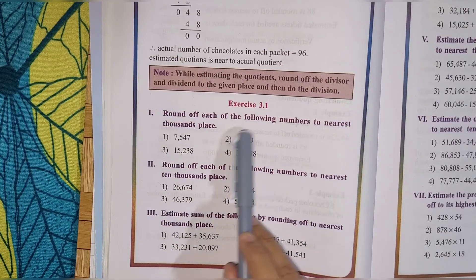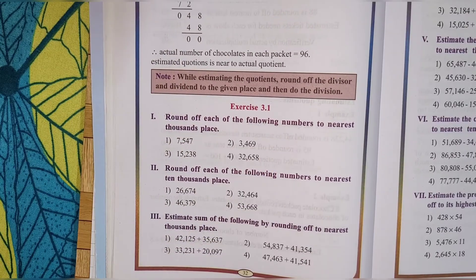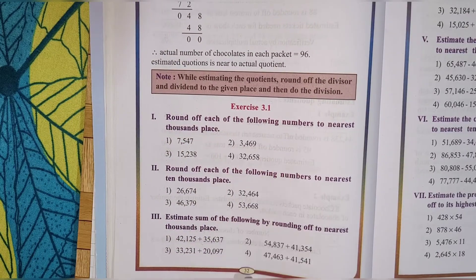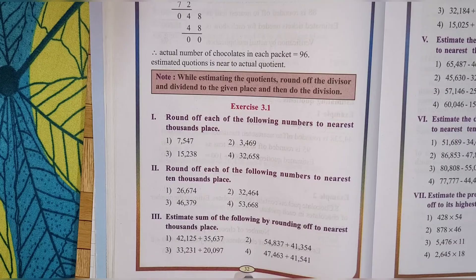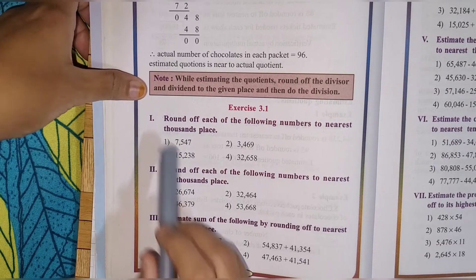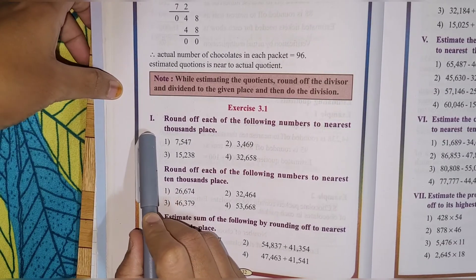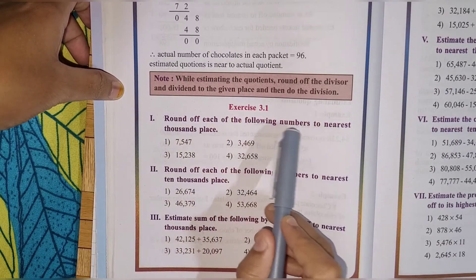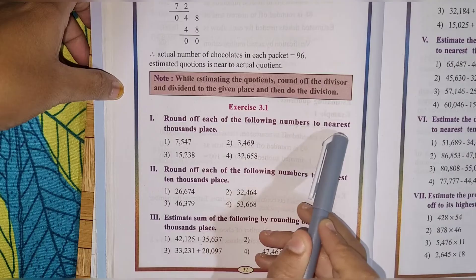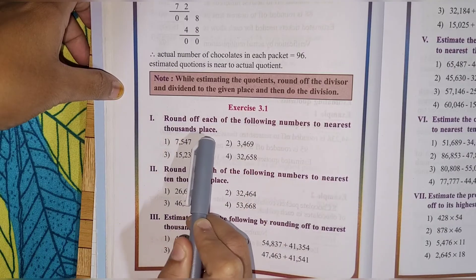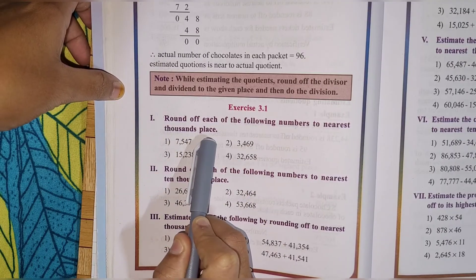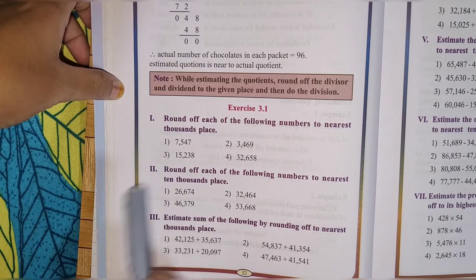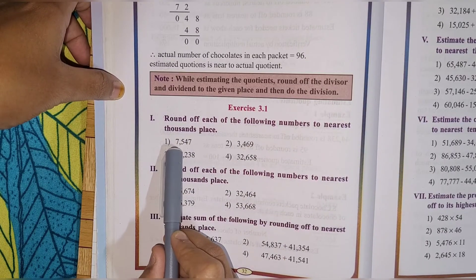We have exercise 3.1, which is on page number 32. The first question asks you to round off each of the following numbers to the nearest thousands. So let's take one example.